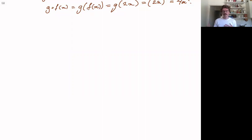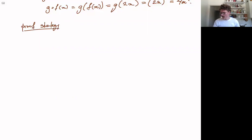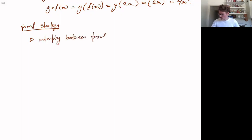Now I want to use these new definitions that we've introduced to give an example of a proof, and try to emphasize some proof strategy in the sense of how would you come up with such a thing. So a little proof strategy. And the idea that I'm going to try to convey is the interplay between proof and counterexample, or more generally, proof and disproof.